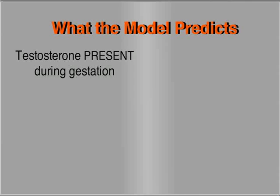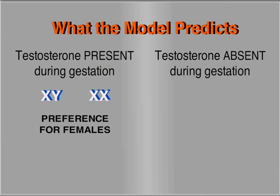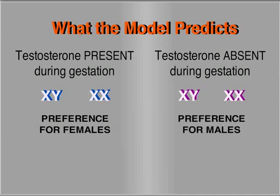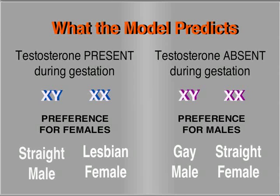So what does our model predict? Our model predicts that if you have testosterone present during gestation, whether it is a male fetus or a female fetus, those children will grow up to be adults who are attracted to females. If you have testosterone absent during gestation, regardless of whether you have a male or a female fetus, then the adult will be attracted to males. We call the first case straight males, the second lesbian females, the third gay males, and the fourth straight females. This is the model to keep in mind as we look at the different studies that have been done.